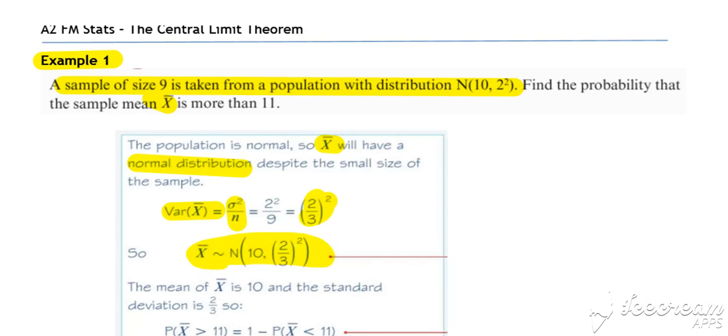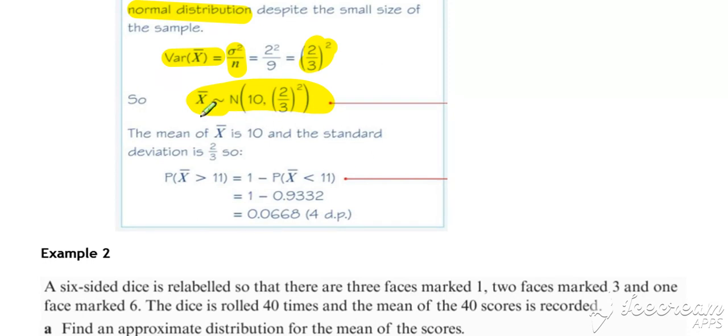And then using that distribution, it's just a case of working out the probability that x bar is greater than 11 in the usual way. And you can just use your calculator to pick off that probability value.